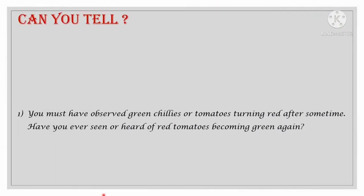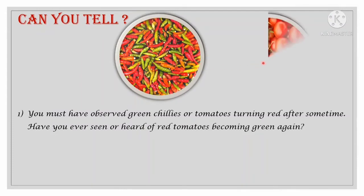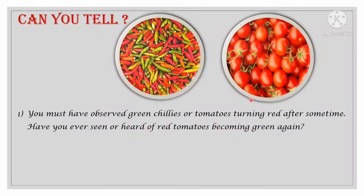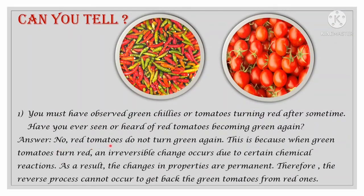You must have observed green chilies or tomatoes turning red after some time. Have you ever seen red tomatoes becoming green again? Is it even possible? No. Red tomatoes do not turn green again. This is because when green tomatoes turn red, an irreversible change occurs due to certain chemical reactions. As a result, the changes in properties are permanent, and the reverse process cannot occur to get back green tomatoes from red ones.